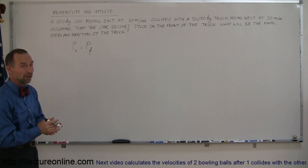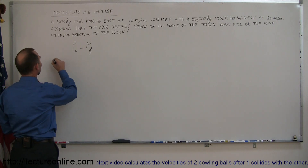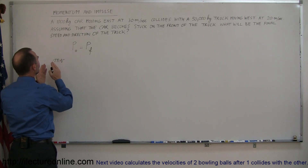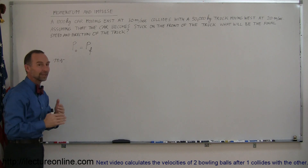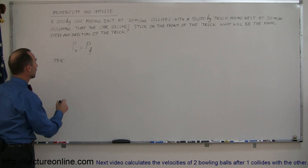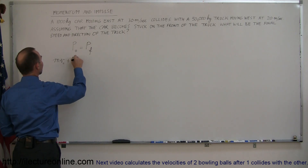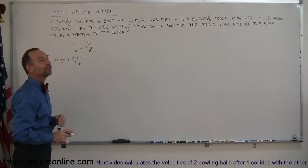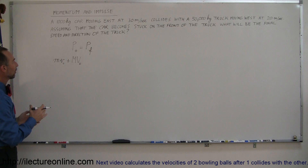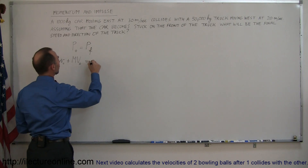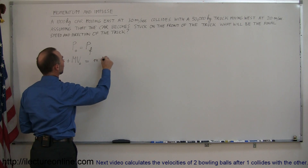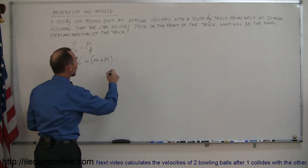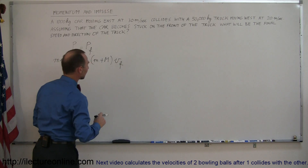The definition of momentum is mass times velocity. So we write: small m times small v (mass and velocity of the car, initial) plus big M times big V (mass and velocity of the truck, initial) equals the mass of the car plus the mass of the truck together, times the final velocity of the two stuck together.